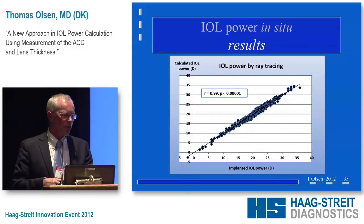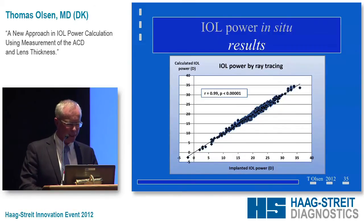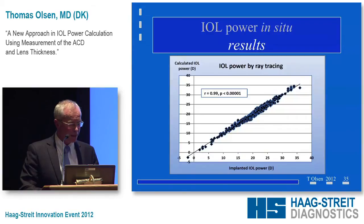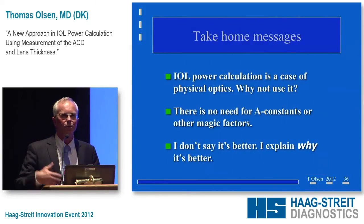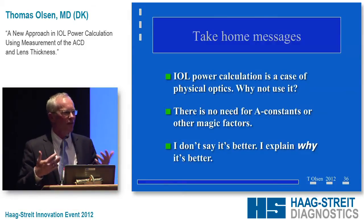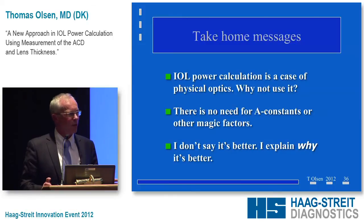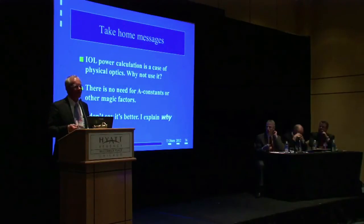We can also calculate the IOL power within the eye — and it really works. Plotting the implanted IOL power on the x-axis against the calculated IOL power on the y-axis, from negative power IOLs to almost 40 diopters, there's a very nice correlation going through the origin. Why don't we use physical optics more often? We don't have to rely on thin lens formulas and fudging everything. I hate A-constants because they're not telling the truth. I would like constants to be truly anatomic in nature.